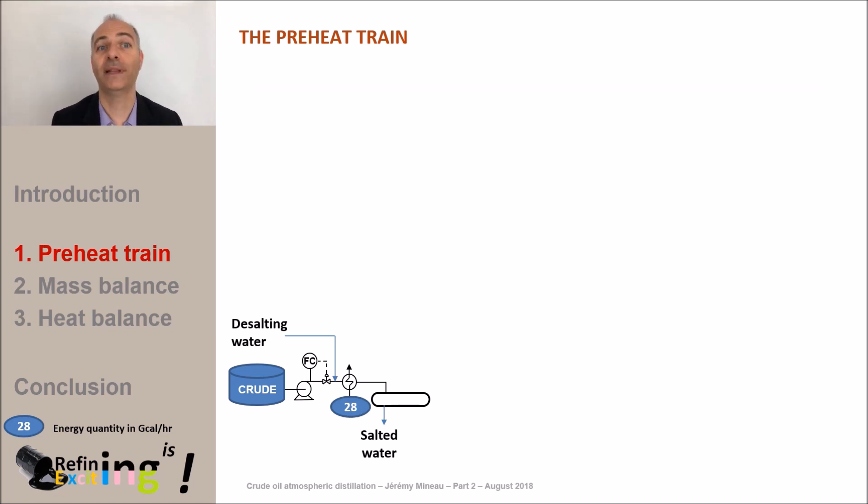Once the crude has been desalted we continue to heat it up in a preheat train that is called hot preheat train whereas the one upstream of the desalter is called cold preheat train. Here the crude is heated up to the highest possible temperature by recovering calories from the products of the distillation. This will be detailed later in the next videos. The typical preheat temperature at the end of the hot train is about 250 to 290 degrees C. For our case a temperature of 280 degrees C will be considered.